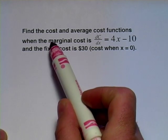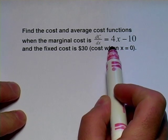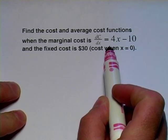is just the derivative of the cost function. So, to find the cost function, we're going to take the antiderivative of this marginal cost function.